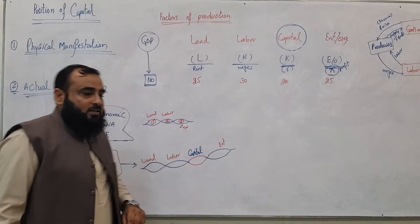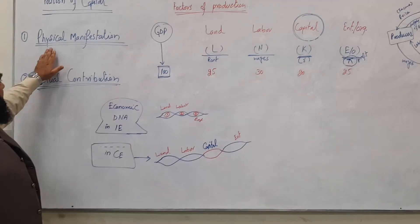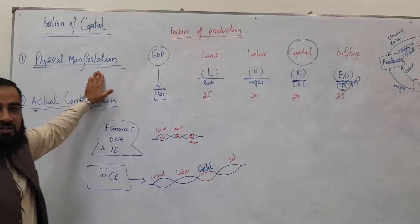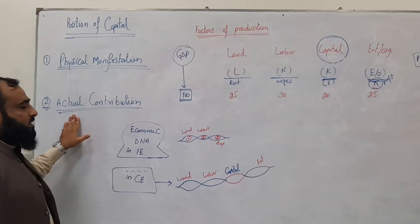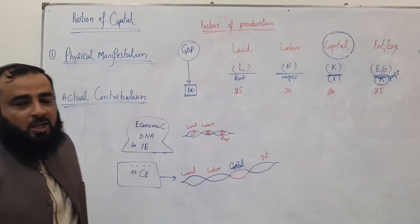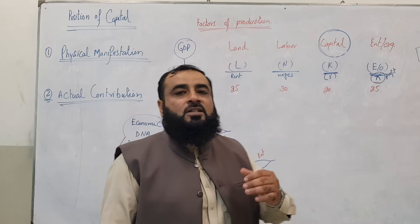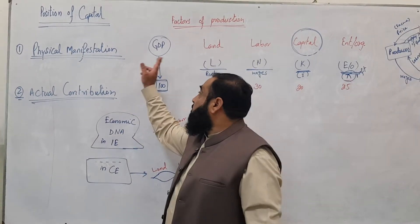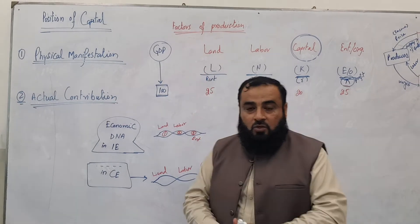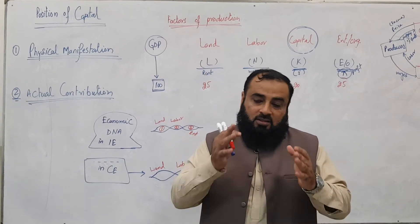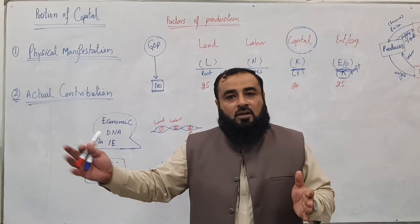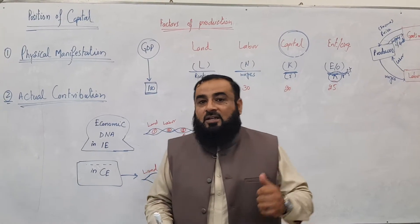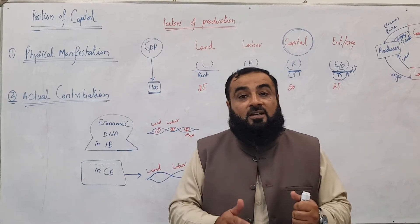The two concepts are: physical manifestation and actual contribution. Physical manifestation means physical appearance. For example, when we say that land is a factor of production, it does not mean that just the surface of land is the factor of production — the surface of land is just the physical manifestation.